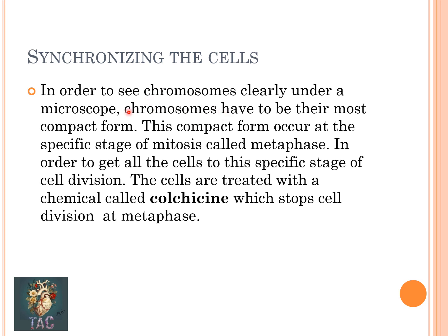The third step is synchronizing the cells. To see chromosomes clearly under a microscope, they must be in their most compact form, which occurs at the metaphase stage of mitosis. This is a very important MCQ: all karyotypic studies are done at metaphase. To get all cells to this specific stage, cells are treated with a chemical called colchicine, which stops cell division at metaphase. This is again a very important MCQ, especially for those preparing for the Part One examination.